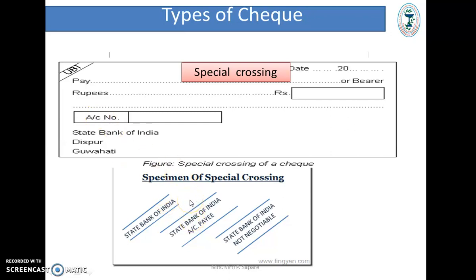So all these are different types of checks: Open Check and Cross Check. A Cross Check has the advantage that money goes directly into the account of the person, while an Open Check results in cash payment.